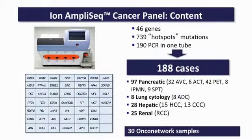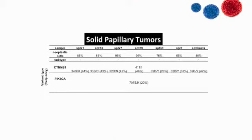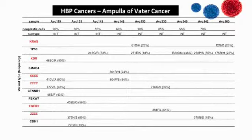This simple system helped us to work on more than 150 cases using the same AmpliSeq Cancer Panel. In solid papillary tumors we found beta-catenin and PI3K mutations. Looking at tumors of a special site — where you can find tumors resembling intestinal, pancreatic, biliary, and gastric tumors — there is not a single one that is comparable to the other.